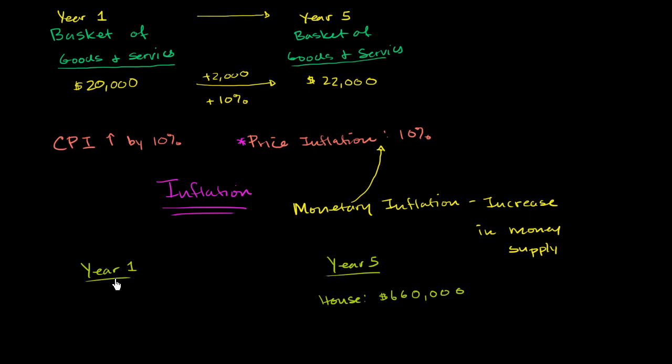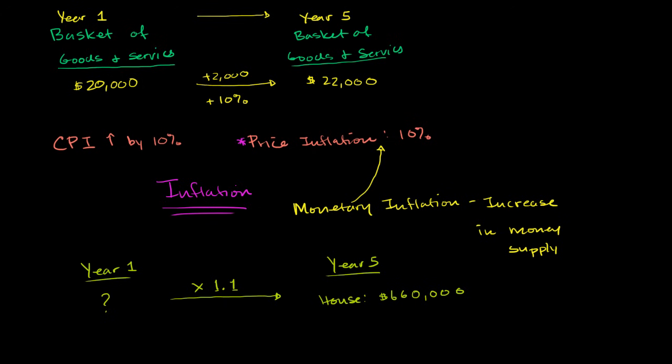So what they're saying is, if you adjust for how much value your money has lost, because if things are getting more expensive, that means each dollar is being worth less. You can buy less with each dollar. So when people say, how much is that adjusted for inflation in year one money, you're essentially saying, what amount of money would that house have had to cost in year one, that when you adjust it for inflation, when you increase it by 10%? So that's the same thing. Increasing by 10% is the same thing as multiplying by 110%, or multiplying by 1.1.